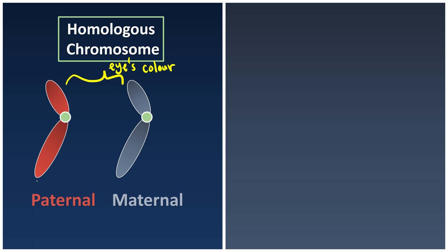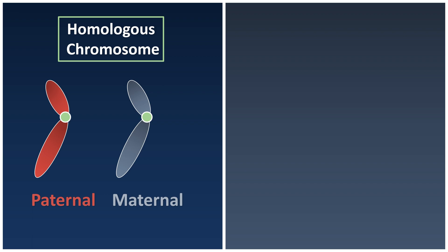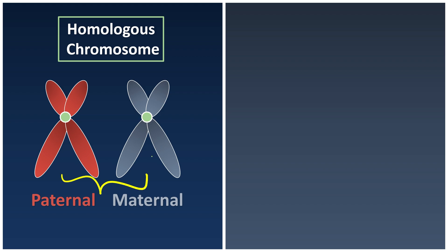Most probably your father has a secret recipe about your eye color, and your mother also has a secret recipe for making eye color. Whenever they decide to give birth to you, they will sit together and decide what color of eyes you will have. But then this chromatin in S phase will eventually undergo DNA replication. So this is why you will see something like this when considering homologous chromosomes.